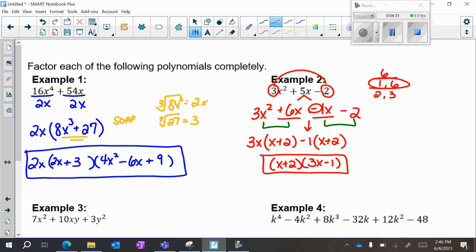Remember that in order to check factoring, you could always multiply back out. So if I wanted to check on the side over here, I could do x plus 2, 3x minus 1, and when I multiply it back out, I should end up with my original question back.